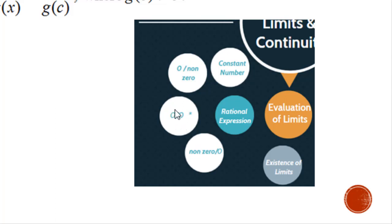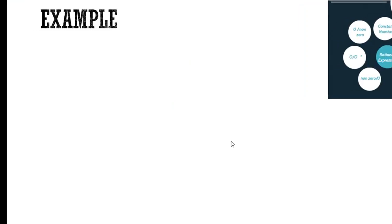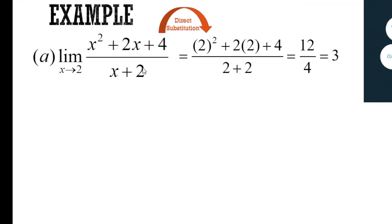Let us look at four examples. For example a, after the direct substitution, we get that numerator over denominator is a ratio of 3, which will be the constant number.